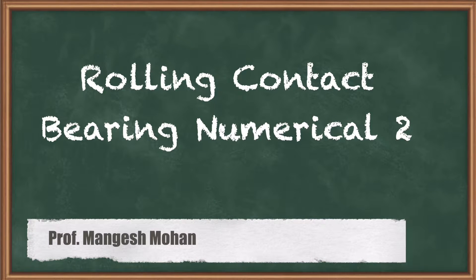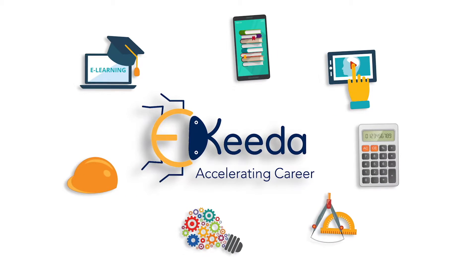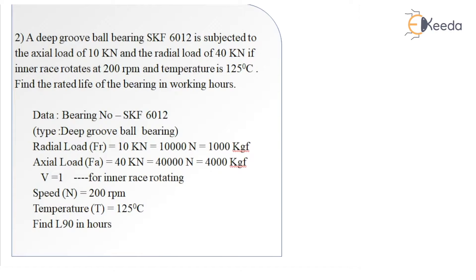Dear student, let's see another numerical from the same category where the bearing number is given and you need to find out the life in hours. The problem statement goes like this: a deep groove ball bearing SKF6012 is subjected to an axial load of 10 kN and a radial load of 40 kN. If the inner race rotates at 200 rpm and the temperature is 125 degrees centigrade, find the rated life of the bearing in working hours.